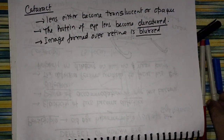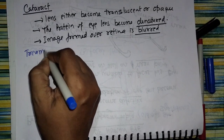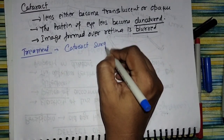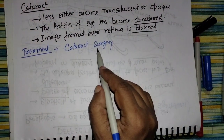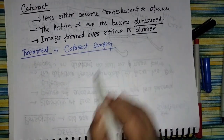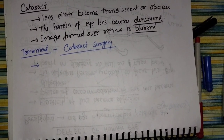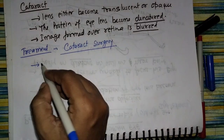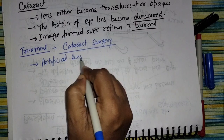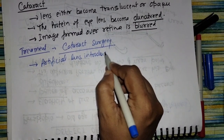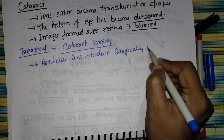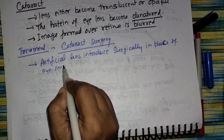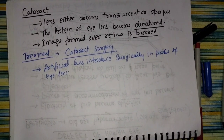Now how can we treat this? The treatment is cataract surgery. In cataract surgery, an artificial lens is surgically introduced in the place of the eye lens. Due to this, the vision improves. So this is about cataract.